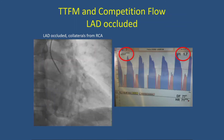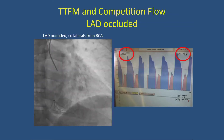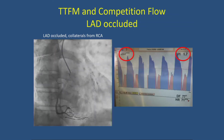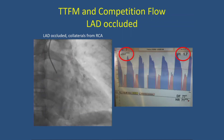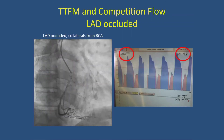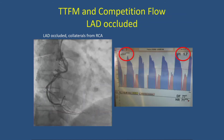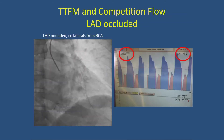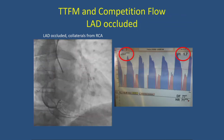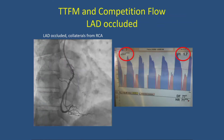Another scenario: when you have occluded vessels, sometimes you think the runoff will be poor because the vessel is occluded. But as shown here, the left mammary to LAD flow is 233 ml with a PI of 1.7. It's not because you have an occluded vessel with a questionable runoff that you will have a low flow. In this case, the flow was actually very high.